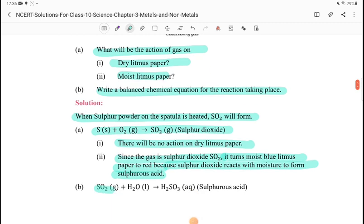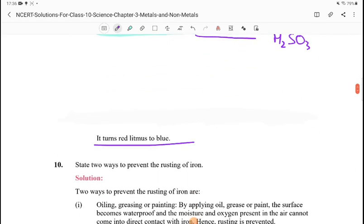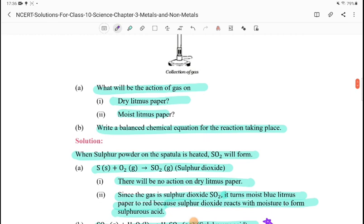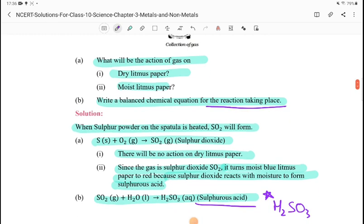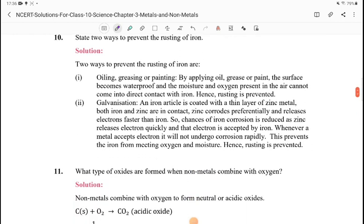Write a balanced chemical equation for the reaction taking place. SO2 plus H2O gives H2SO3, sulfurous acid. This will turn blue litmus red. We will see the next questions in the next video. Thank you.